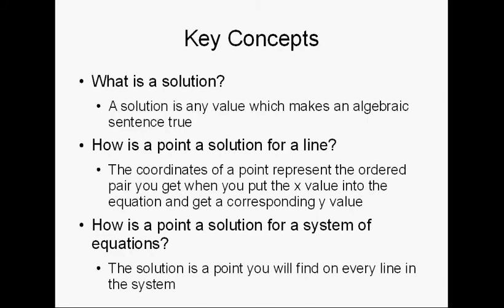Let's review these key concepts real quick. First, let's remember what is a solution? A solution is any value which makes an algebraic sentence true. How is a point a solution for a line? The coordinates of that point represent all the little ordered pairs on the line if you graph it. So that means that's the solution.